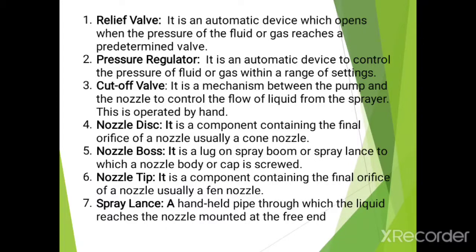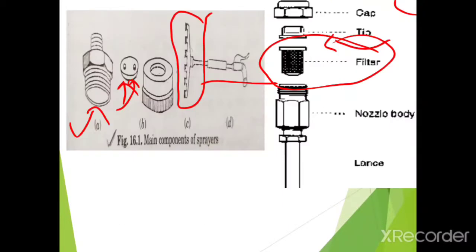The next component is the nozzle disc. It is a component containing the final orifice of the nozzle, usually a cone nozzle. Then nozzle boss — it is a lug on a sprayer or spray lance to which a nozzle body or cap is screwed. Then nozzle tip — it is the component containing the final orifice of the nozzle, usually a fan nozzle. Fan nozzle and cone nozzle are the types of nozzle. Then spray lance — a hand-held pipe through which the liquid reaches the nozzle mounted at the free end.